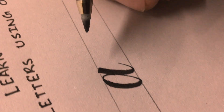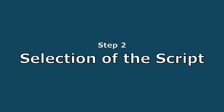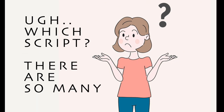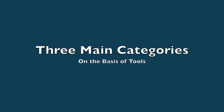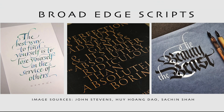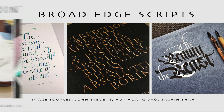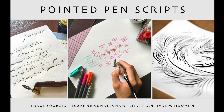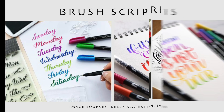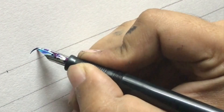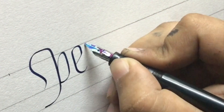It will also help you in selecting one script, which is step 2: selection of script. Since you can't learn all the scripts at once unless you are a superhuman, you have to select one. There are three major categories: the broad edge script, the pointed pen script, or the brush script. There are further variations inside that you will get to know after you dive deep into it.